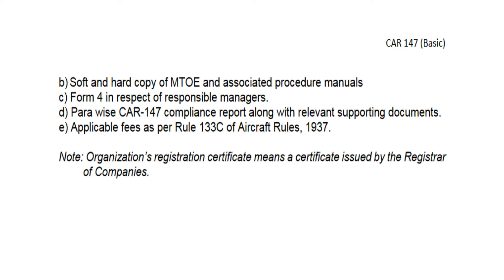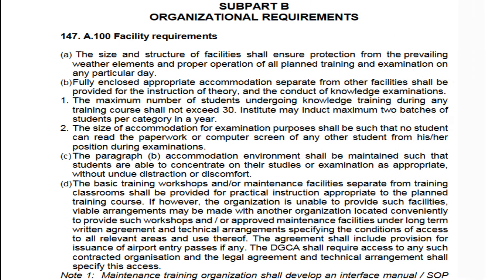Now we look at Sub Part B - Organizational Requirements. The first is Facility Requirements. The most important requirement is that wherever students have their examination or training, there must be proper weather protection - no leaking roofs, no excessive heat or cold that would prevent students from working properly. There must also be proper office accommodation for all responsible managers and instructors.